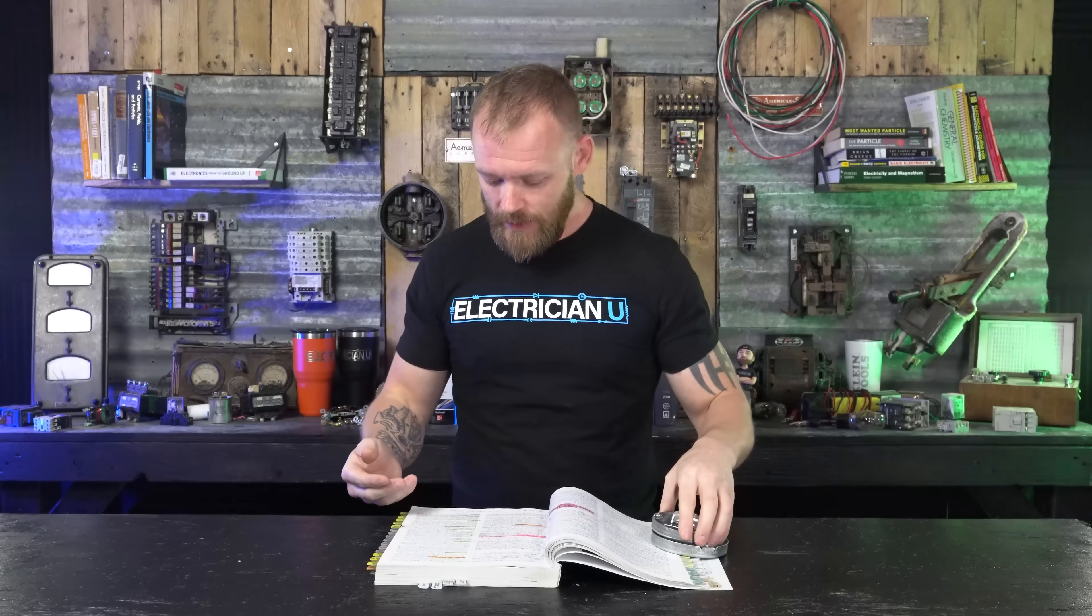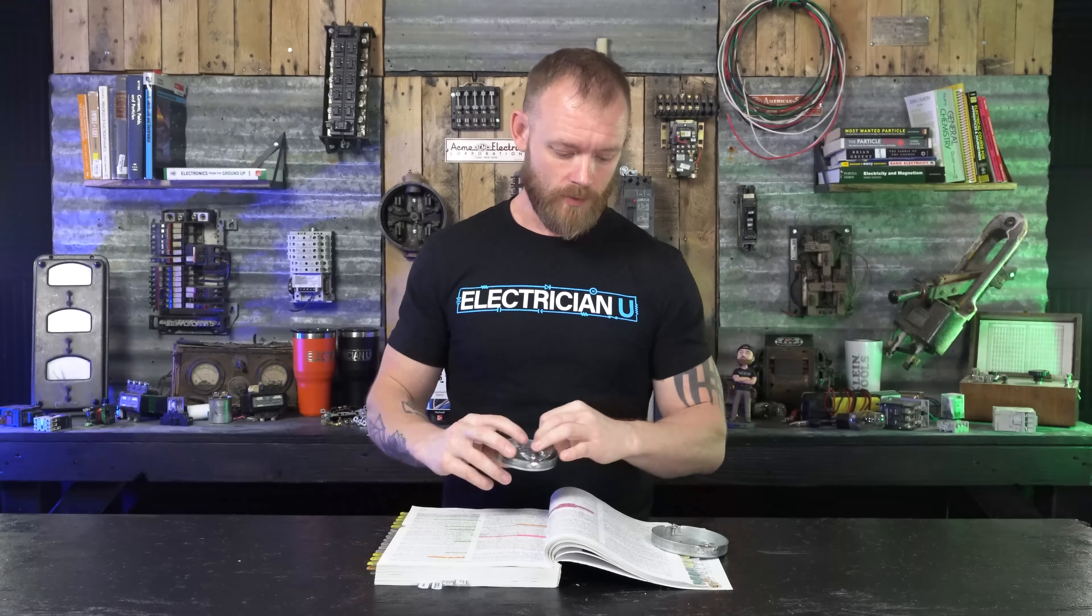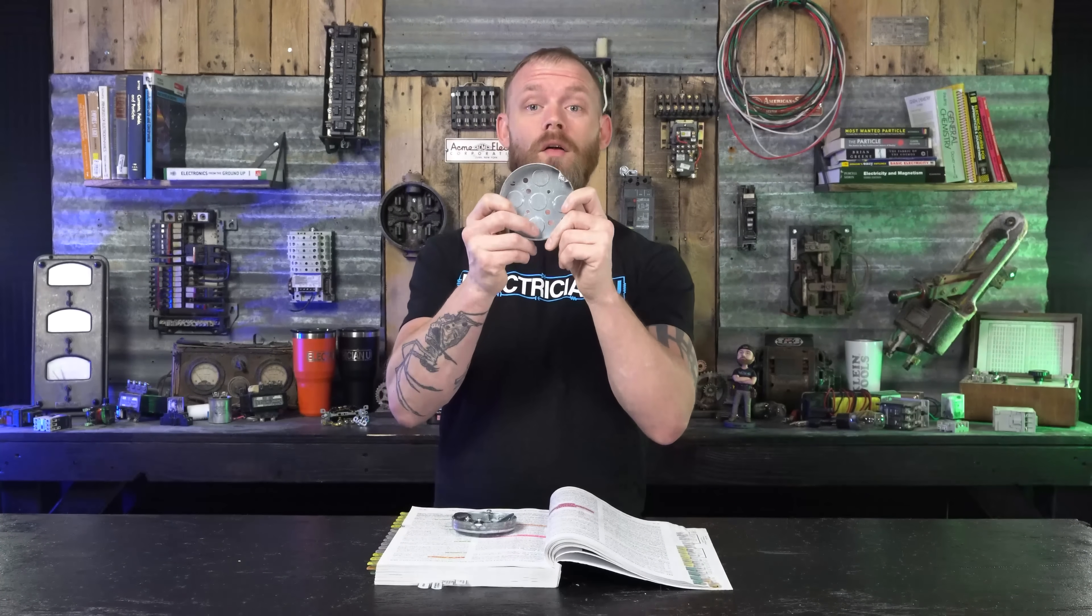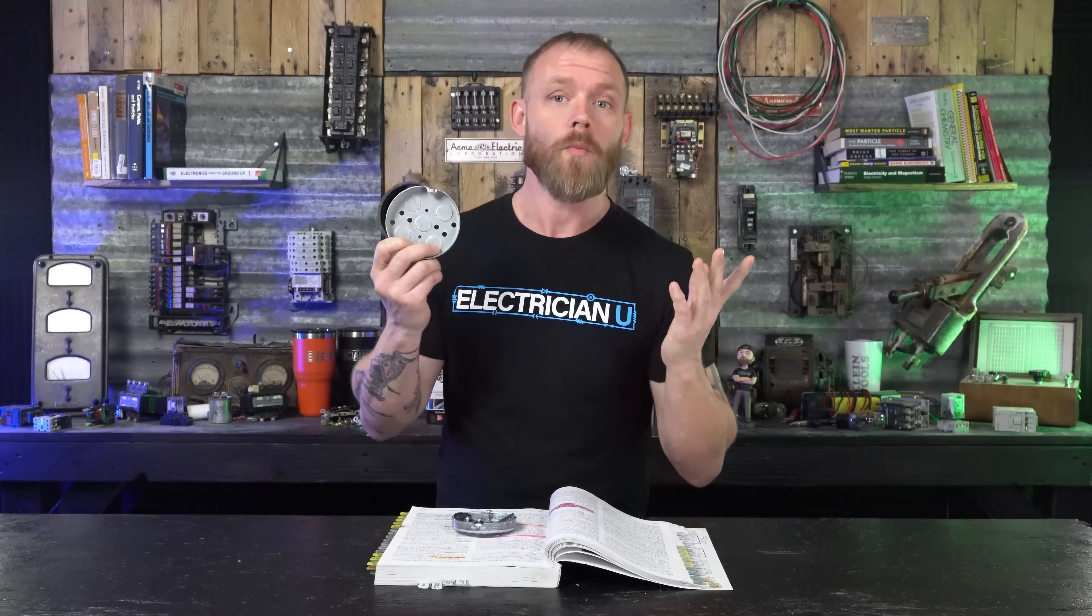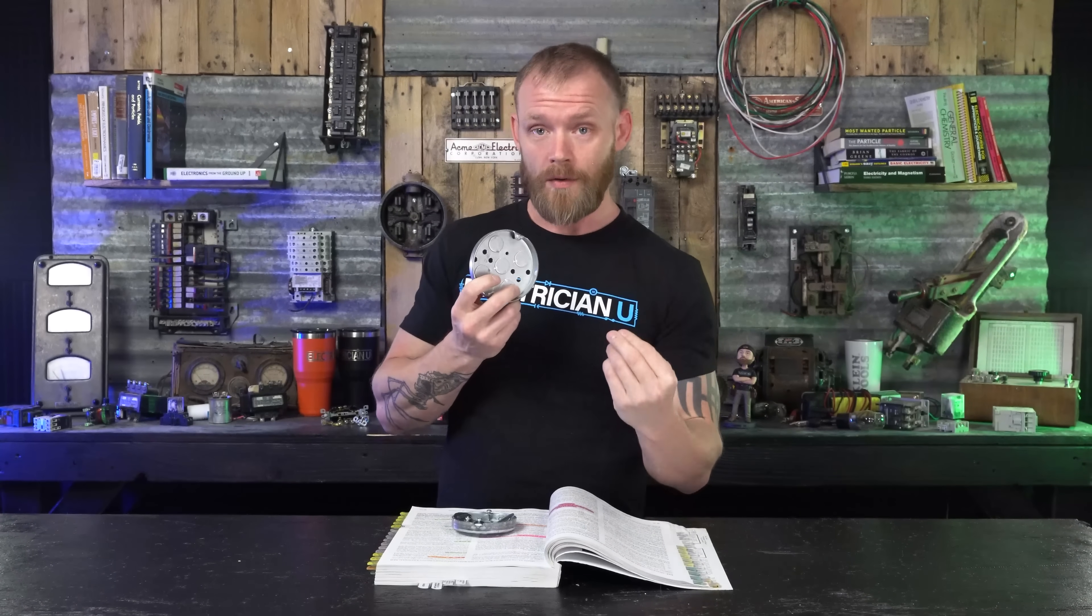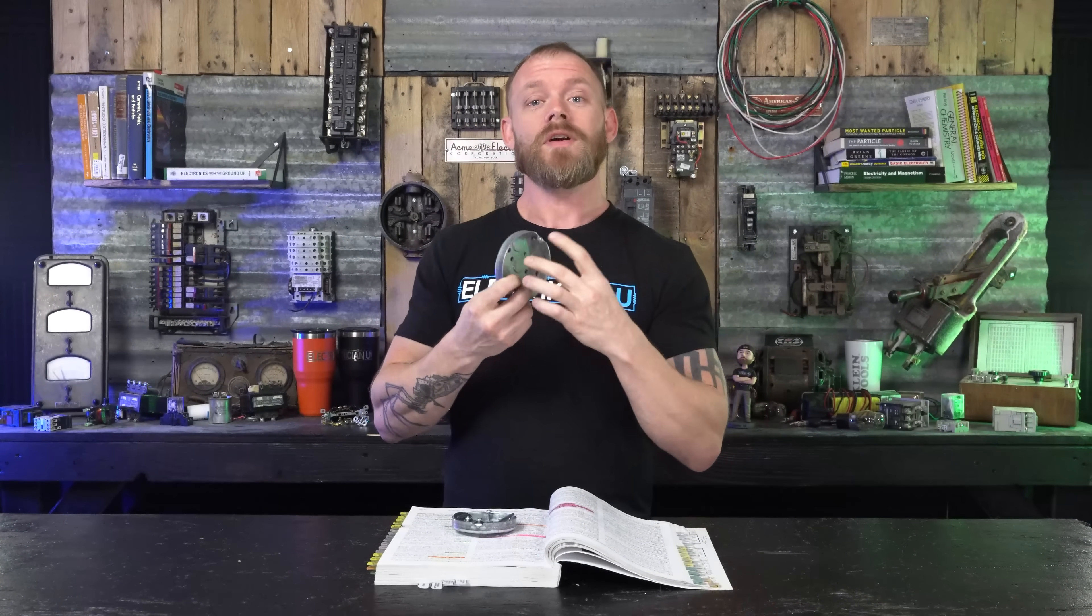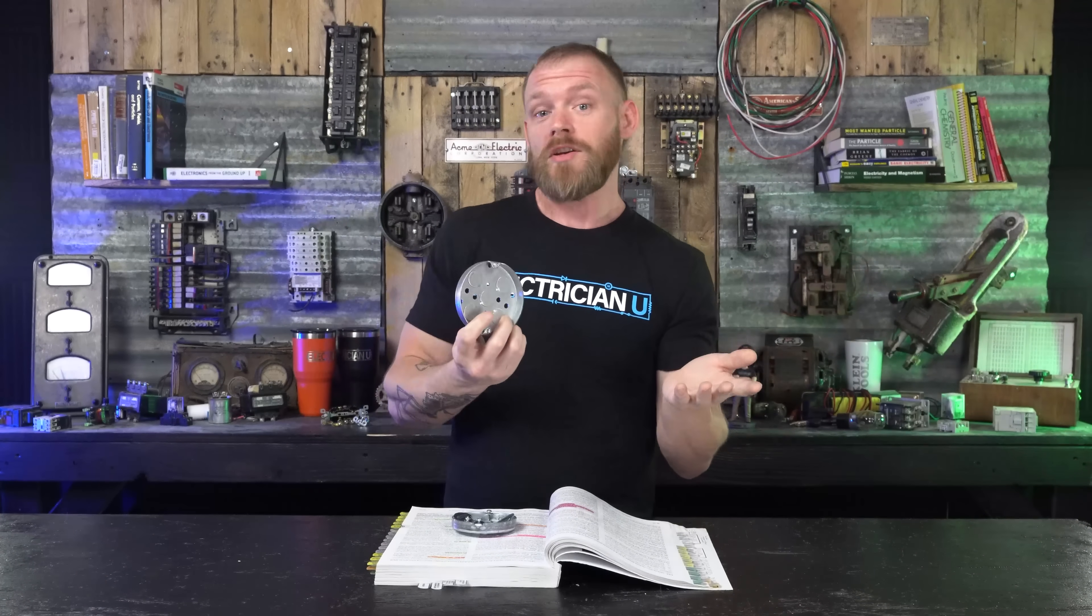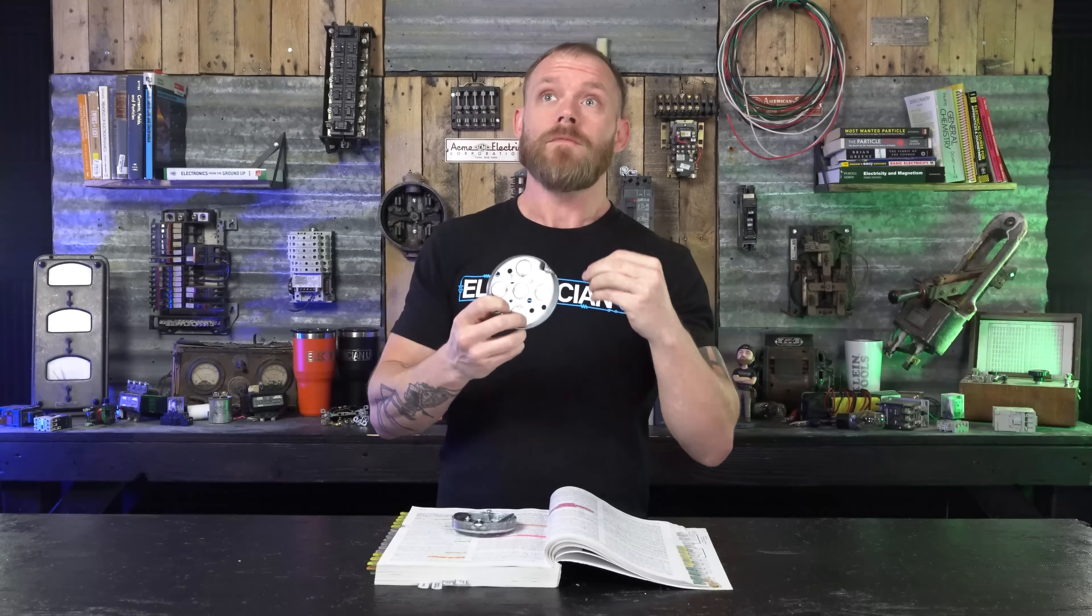Another thing is if you have multiple equipment grounding conductors, say we ran four pieces of 12-2 Romex into this thing. If you have up to four equipment grounding conductors or grounds, you can count all of them as a single conductor. Anything more than four you got to count each one individually.